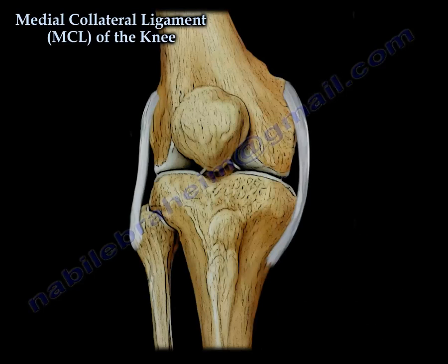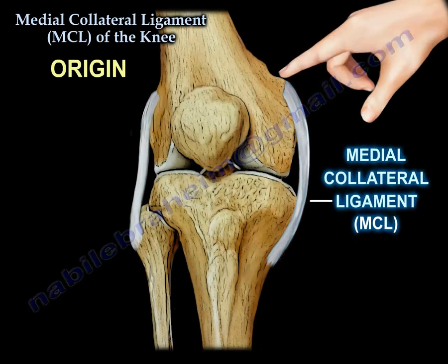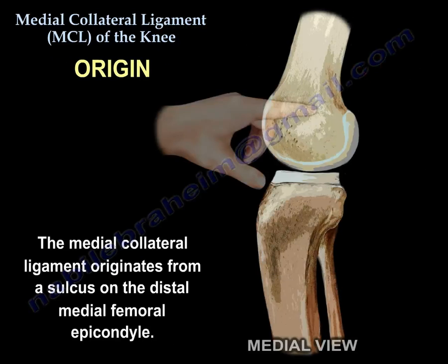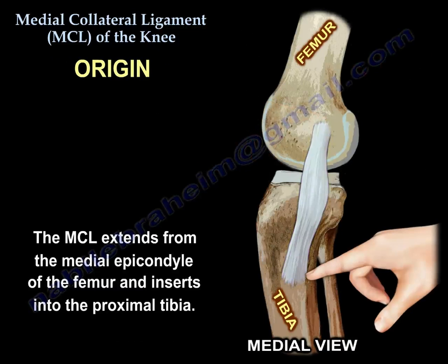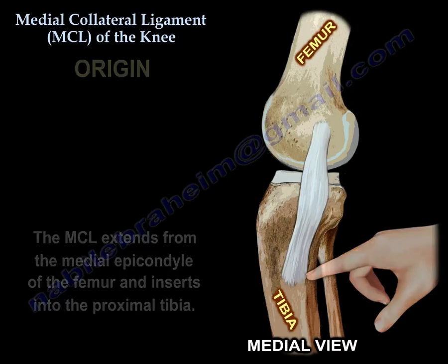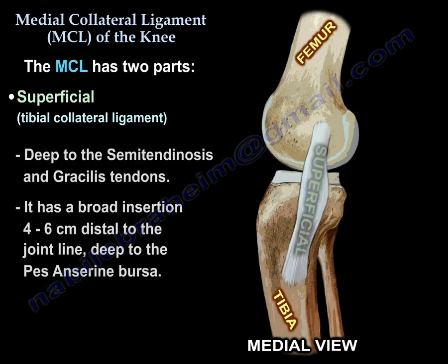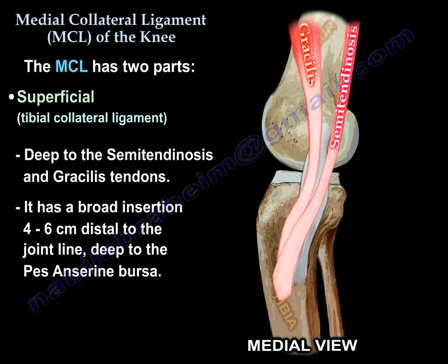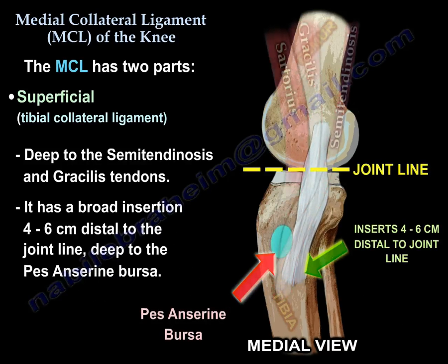The Medial Collateral Ligament Anatomy: the origin is a sulcus on the distal medial femoral epicondyle and it inserts into the proximal tibia. It has two parts: the superficial, which is called the tibial collateral ligament, and it is deep to the semitendinosus and the gracilis tendon. It has a broad insertion 4 to 6 cm distal to the joint line, deep to the pes anserinus.